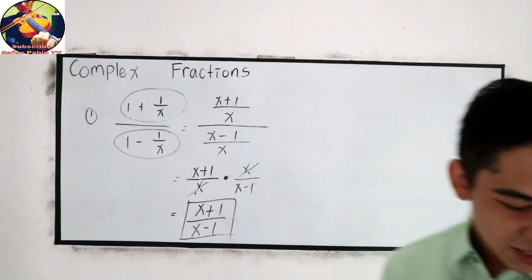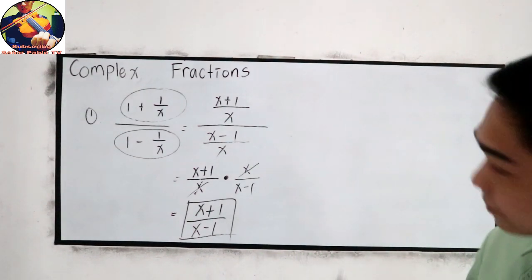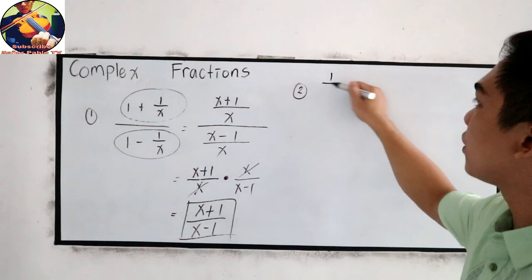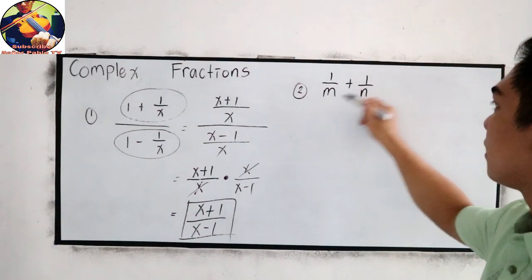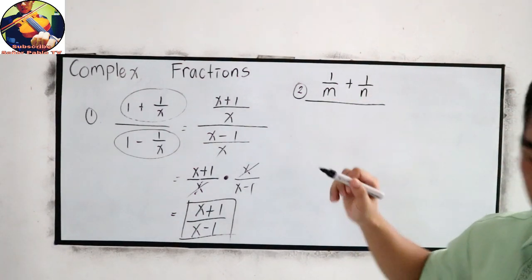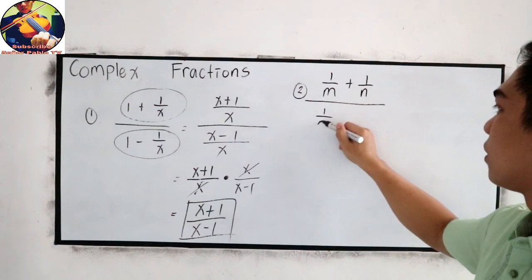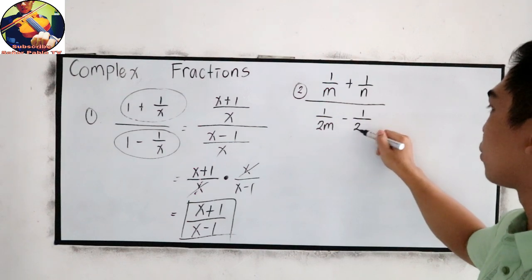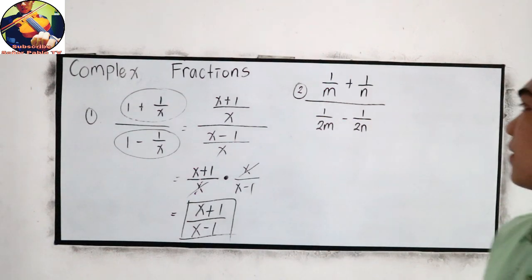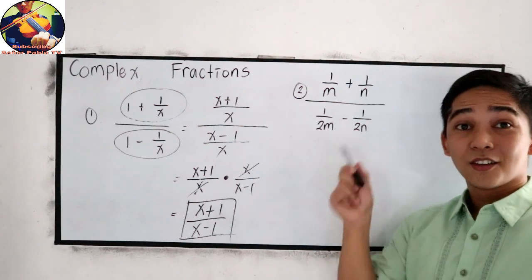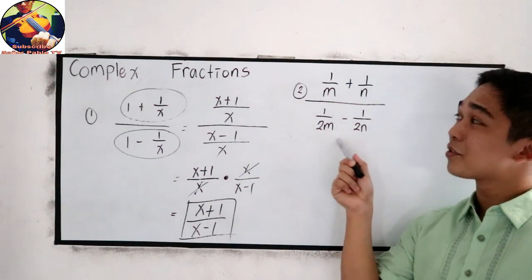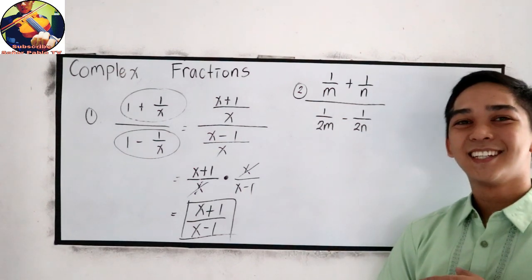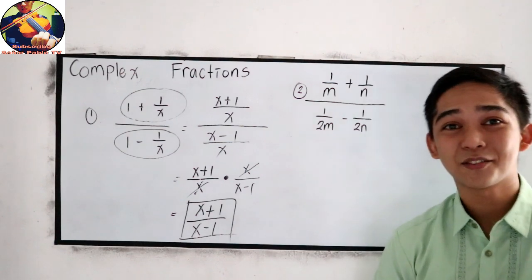Next, number 2. Let's say 1 over m plus 1 over n all over 1 over 2m minus 1 over 2n. If you want to try to solve number 2, pause the video. Then, if you are done answering, resume watching.